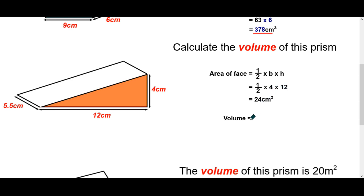Finally, to get the volume, you do area times length. And the area of the face part is 24. And then the length of the prism is 5.5. That triangle continues all the way along this bit here. So 24 times 5.5. And you get an answer of 132 centimeters cubed.